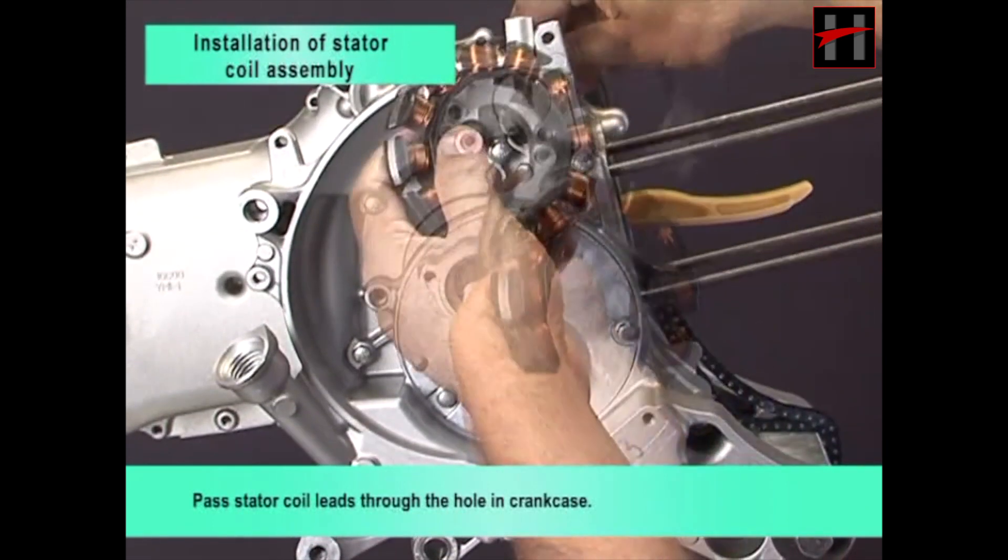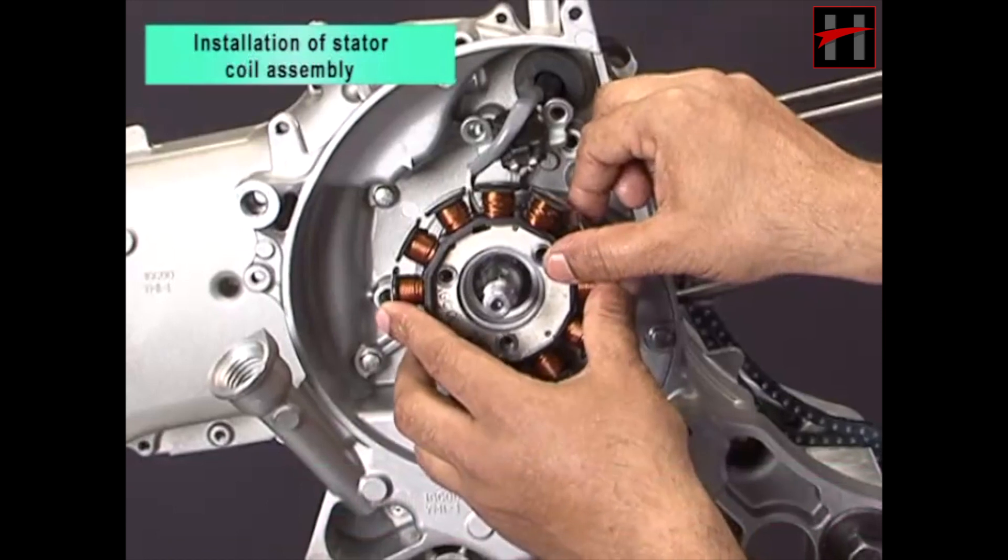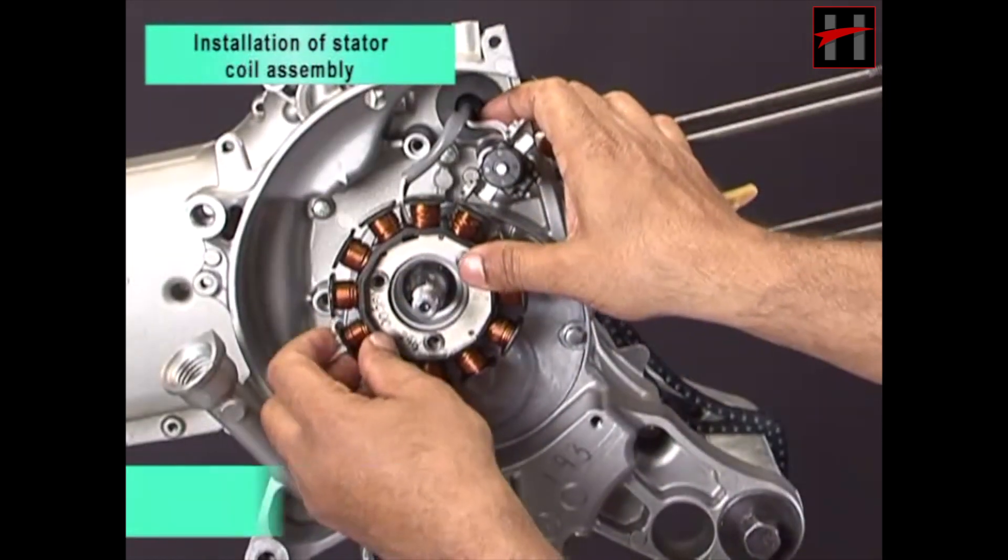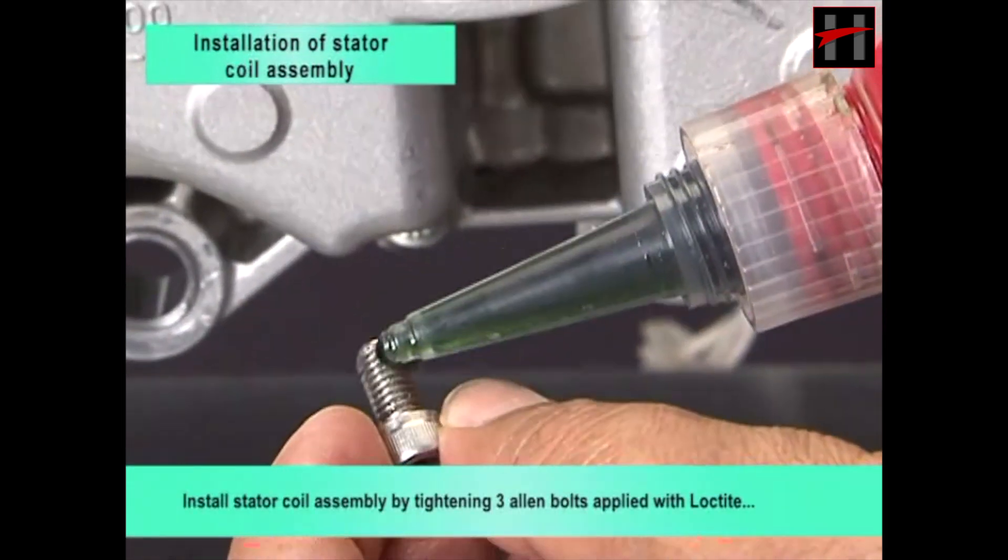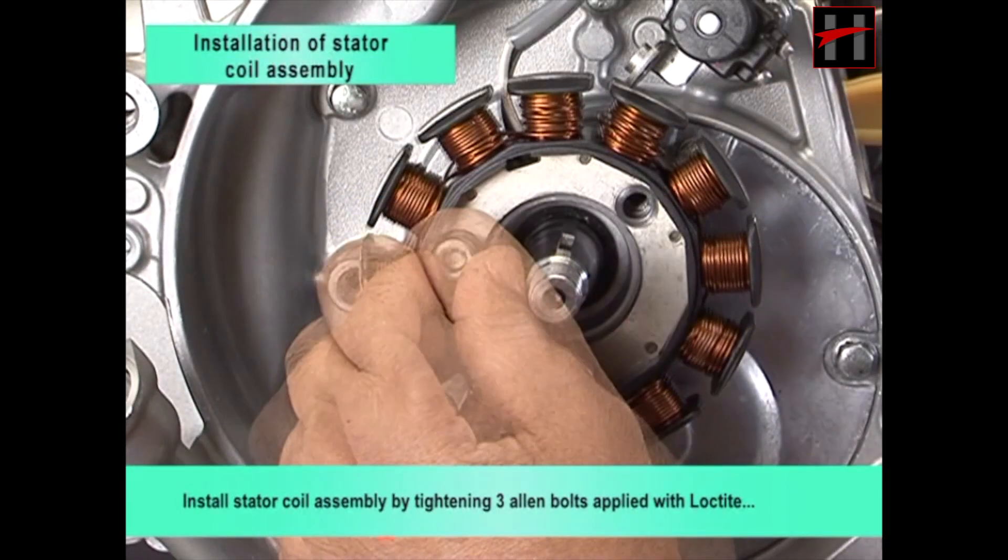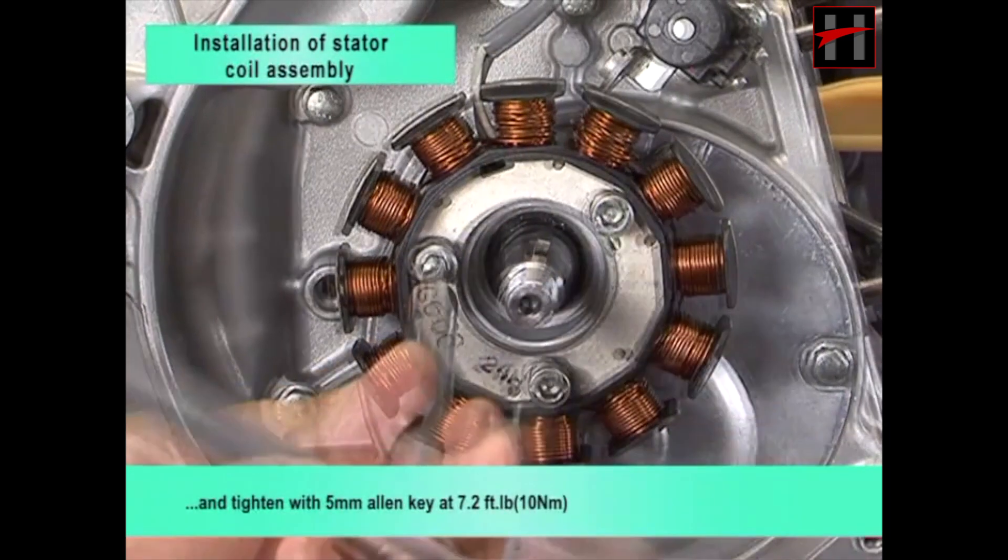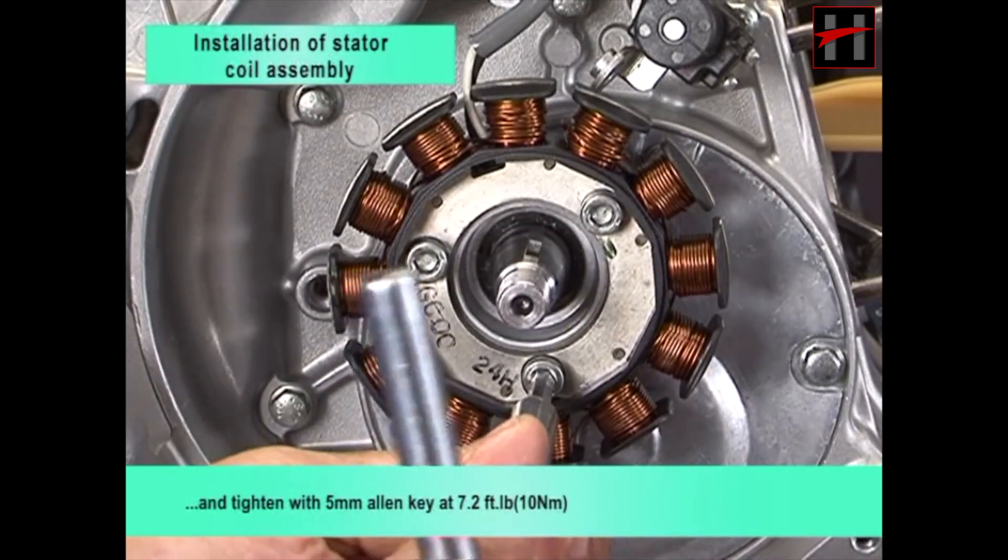Pass stator coil leads through the hole in crankcase. Install stator coil assembly by tightening 3 Allen bolts applied with Loctite and tighten with 5 mm Allen key at 7.2 ft-lbs.